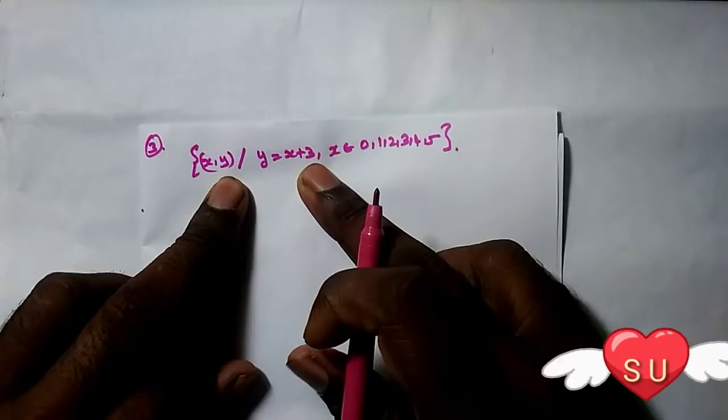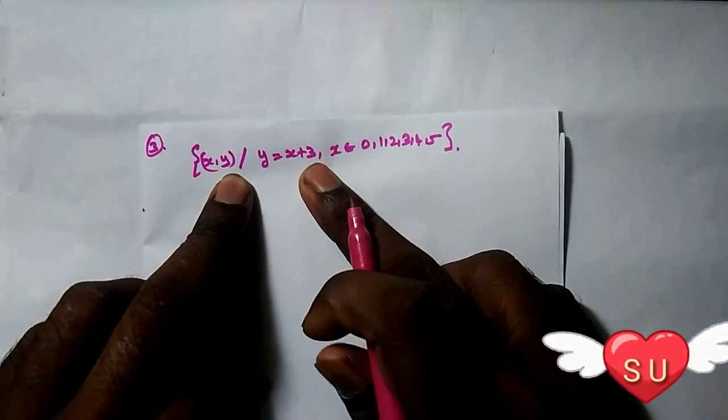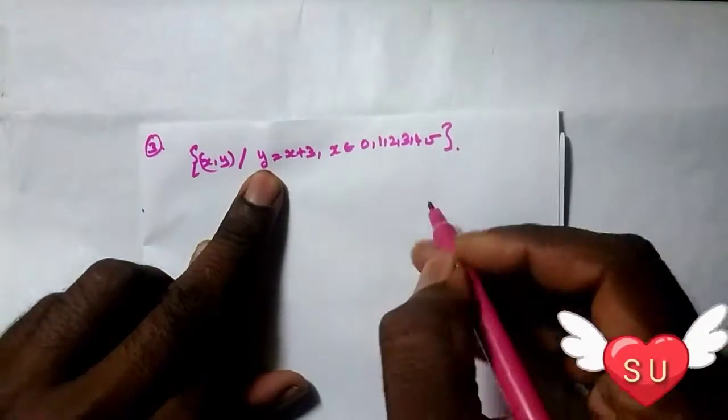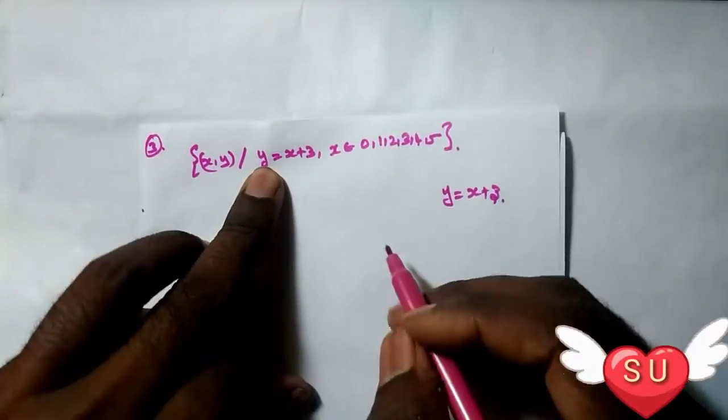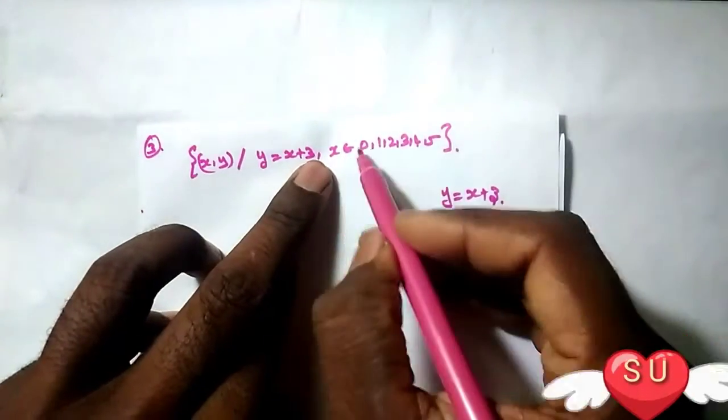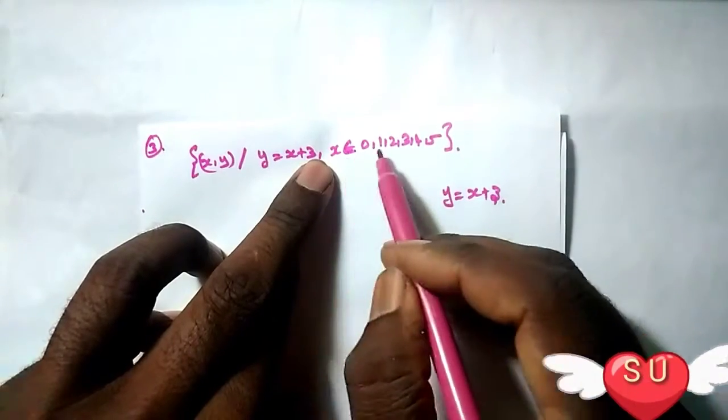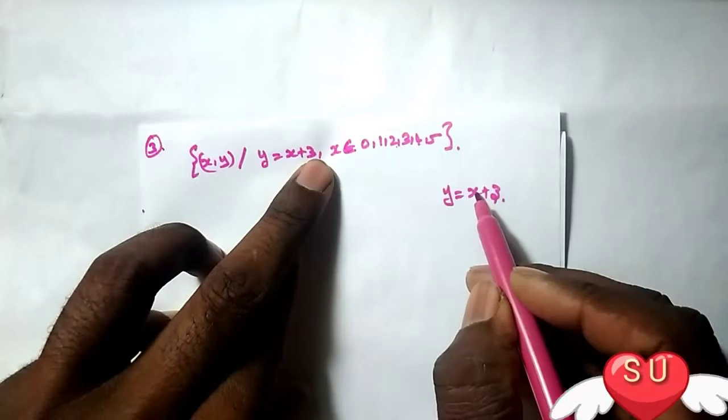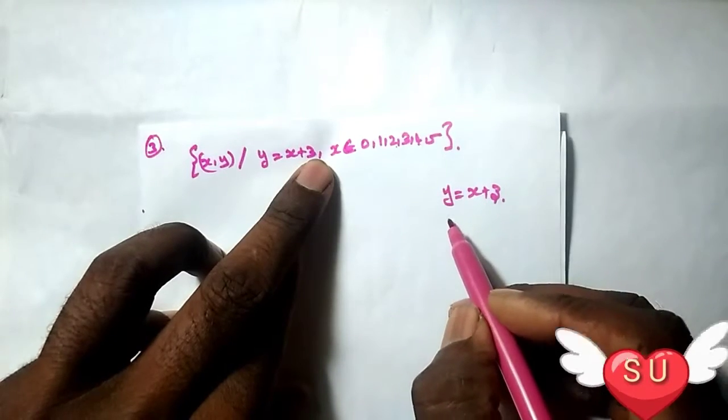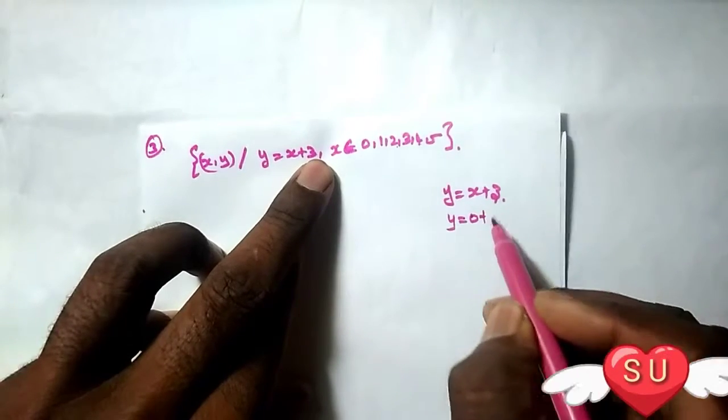So if we take the values for x, x would be 0, 1, 2, 3, 4, 5. These are the x values we'll use.